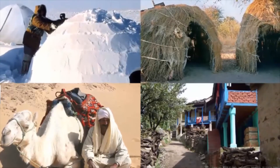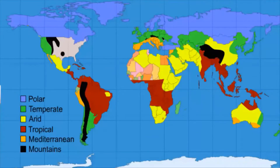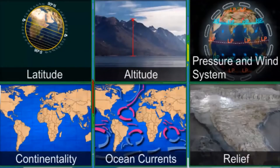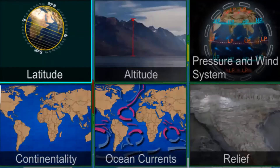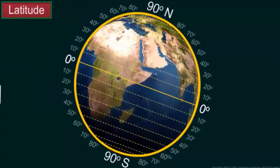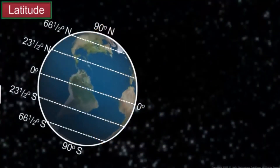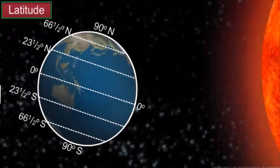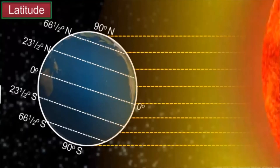The climatic conditions also influence the lifestyles of the people living in these regions. There are many different factors that affect climate around the world. These factors are often referred to as controls. The first major control of climate is latitude. Latitude is the measurement of the distance of a location on the Earth from the Equator. It is one of the primary factors that affect the temperature of a place. Places located further away from the Equator receive less sunlight compared to those located closer to it.